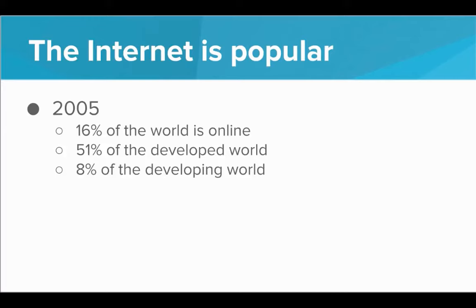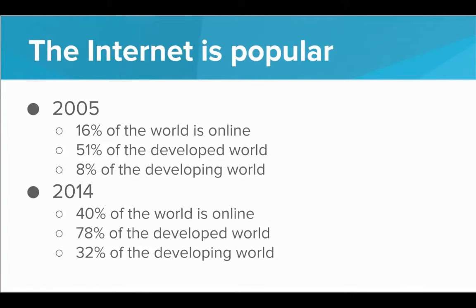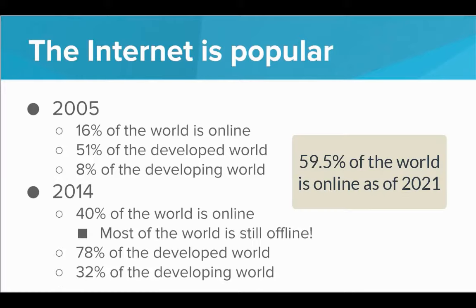It may come as no surprise that the Internet has gotten incredibly popular. In 2005, only 16% of the world was online — the majority of the developed world, but only 8% of the developing world. Fast forward to 2014 and we have 40% of the world online: 78% of the developed world and 32% of the developing world. Even in 2014, the majority of the world was still offline — we take it for granted that the Internet pervades so many aspects of our lives.